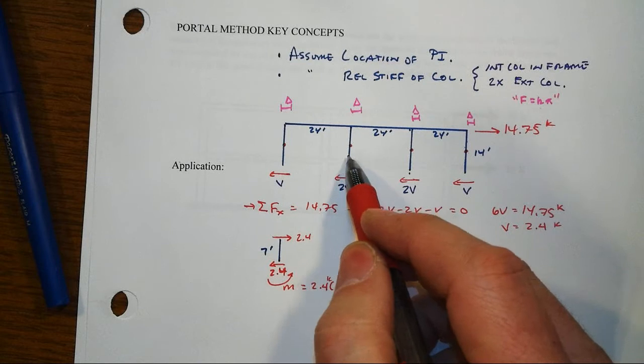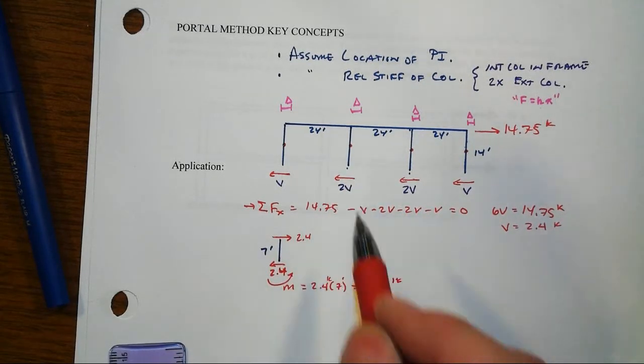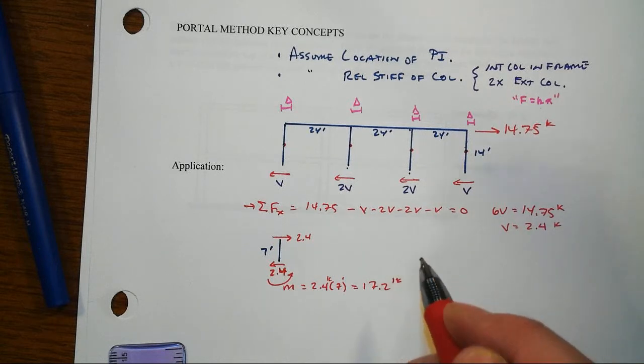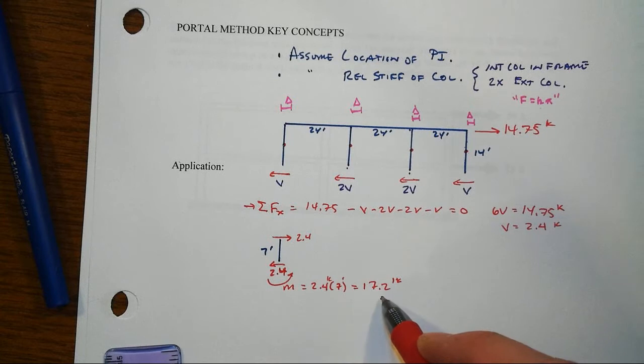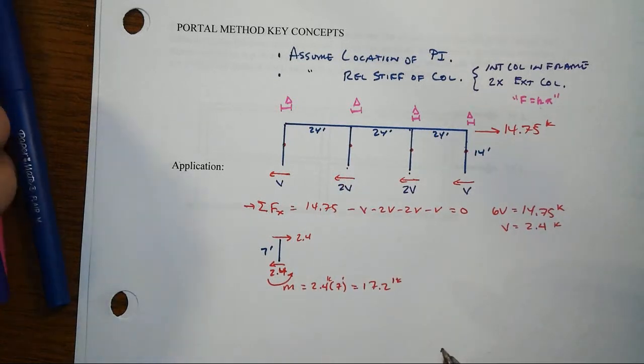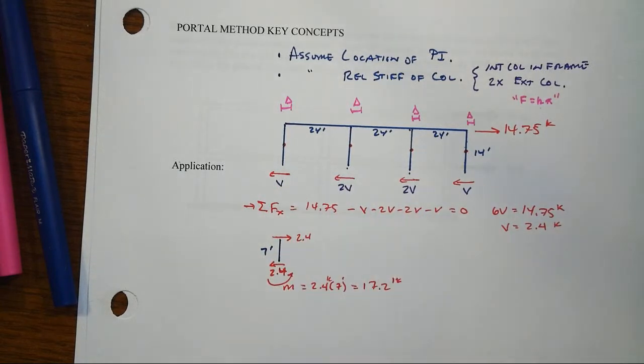The interior columns, of course, will be twice as big because the shear will be twice as big. It will be 4.8 and change, probably about 4.9 when you round it up. And then this will become about 34.4 for the moment at the base there. These are now different compared to what we had before. And that gives us a lot of things, but it doesn't give us everything.